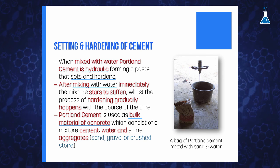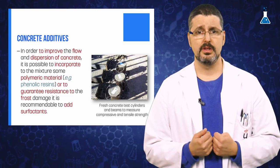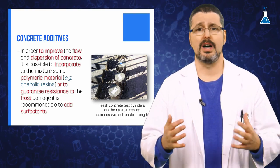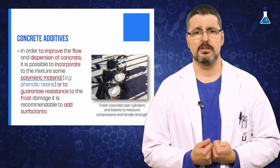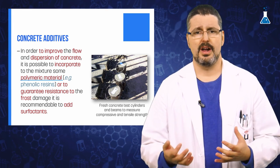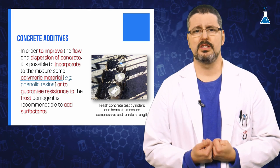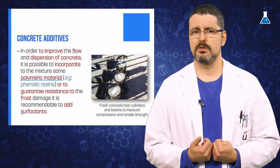There are different types of aggregates, such as sand, gravel, or crushed stone. Additionally, additives can be incorporated to confer concrete with other properties. For example, to improve its flow and dispersion, polymeric materials such as phenolic resins can be added. On the other hand, to guarantee the resistance of concrete to frost damage, it is recommended to incorporate surfactants.